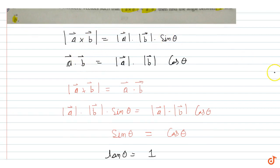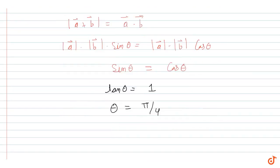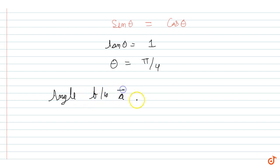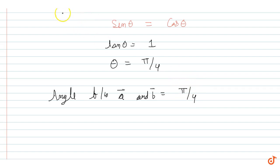So the angle between a vector and b vector is equal to pi by 4. This is the answer for this question. The angle is pi by 4.